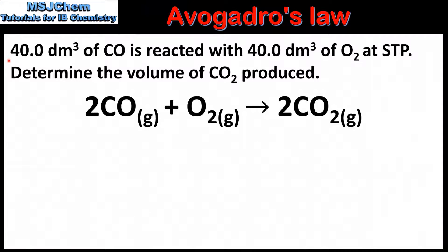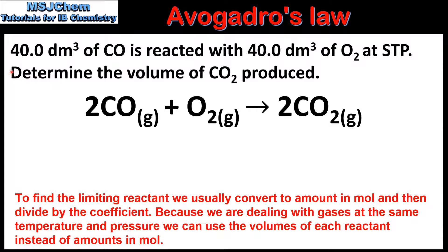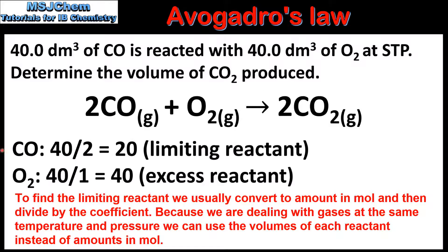In our first example, 40 cubic decimetres of carbon monoxide is reacted with 40 cubic decimetres of oxygen at STP. Determine the volume of carbon dioxide produced. The first step is to determine the limiting reactant. To do this we divide the volume of each reactant by its coefficient in the balanced equation. For carbon monoxide that's 40 divided by 2, which gives us 20, and for oxygen it's 40 divided by 1, which gives us 40. The lowest value, which is carbon monoxide, is the limiting reactant, and oxygen is the excess reactant.